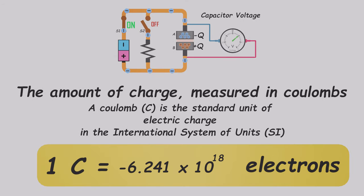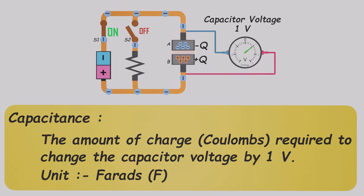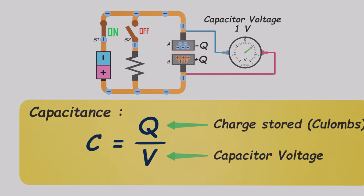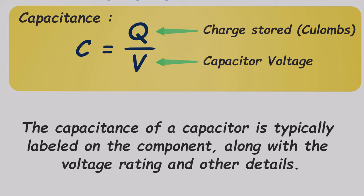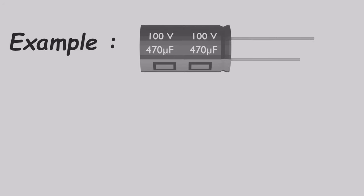The Coulomb is the unit of electric charge in the International System of Units. One Coulomb is equal to approximately six quintillion positive or negative charges. The capacitance of a capacitor is the amount of charge, measured in Coulombs, needed to change the voltage across the capacitor by one volt. Capacitance is measured in units called farads. For instance, a capacitor might be marked as 100 volts and 470 microfarads.